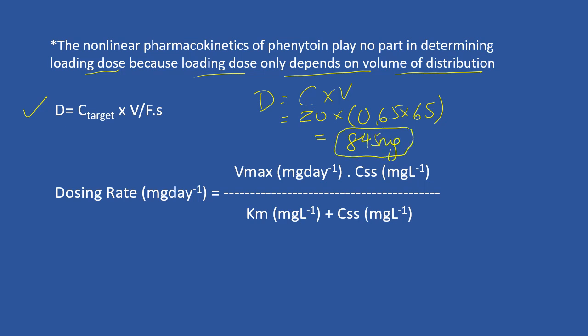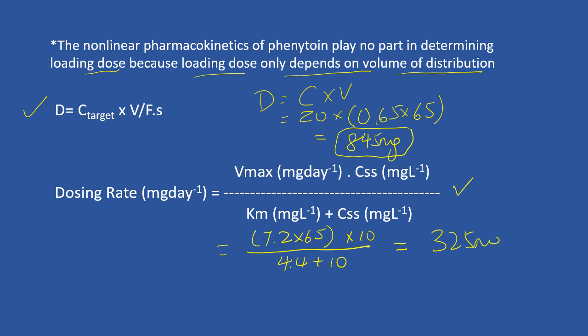For the next part of the question, you need to calculate the dosing rate. Again, remember this equation: Vmax is 7.2 multiplied by the body weight, multiplied by 10 (the target concentration), divided by Km of 4.4 plus the target concentration of 10. Solving this equation, the maintenance dose will be 325 mg.